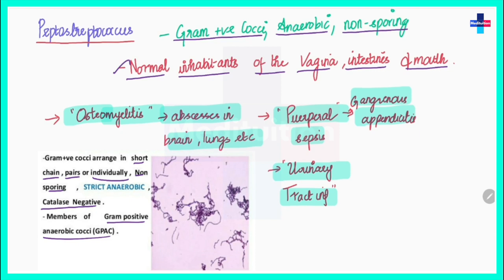Peptostreptococcus causes several clinical infections including osteomyelitis, which is infection and inflammation of the bone or bone marrow. It can cause abscesses in the brain and lungs and other organs. It can cause puerperal sepsis, urinary tract infections, genital infections, wound infections, and gangrenous appendicitis.